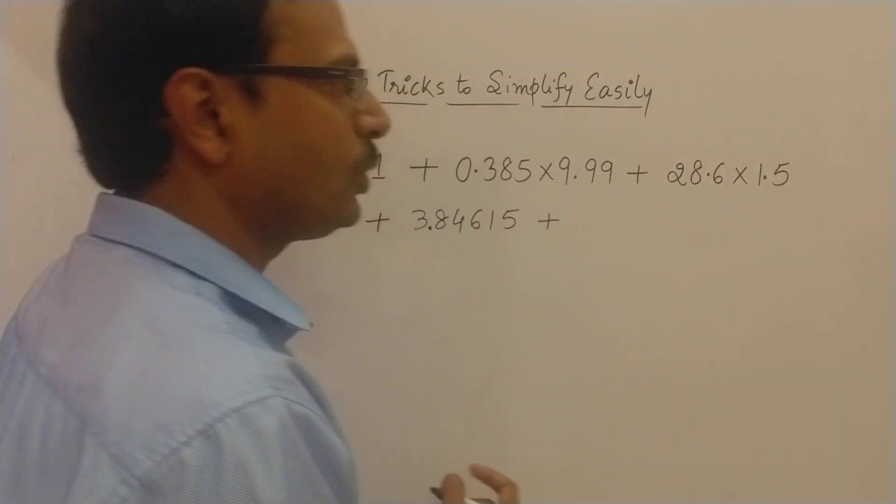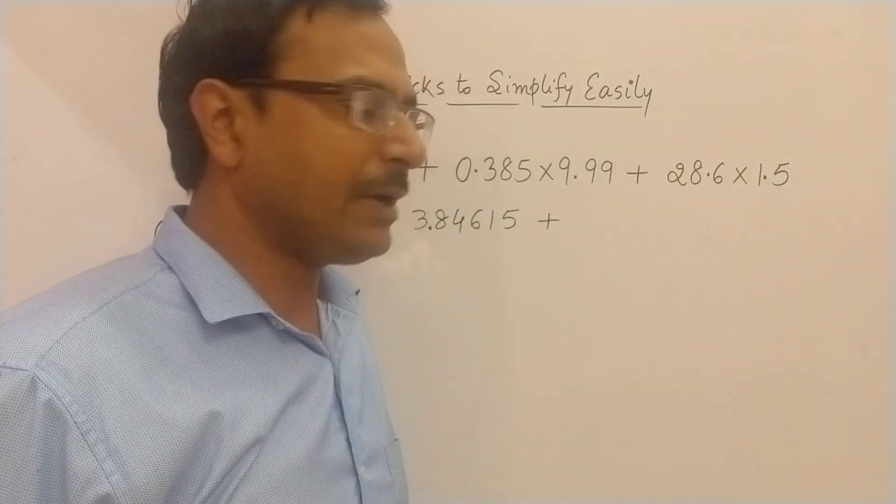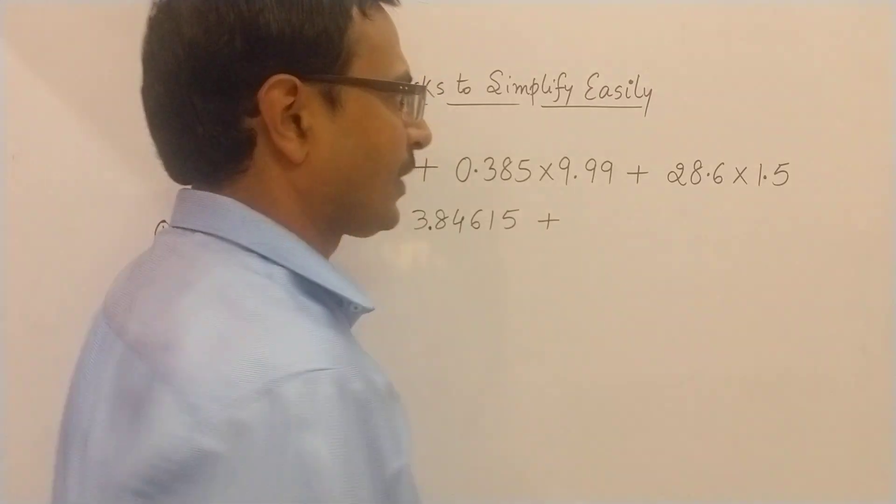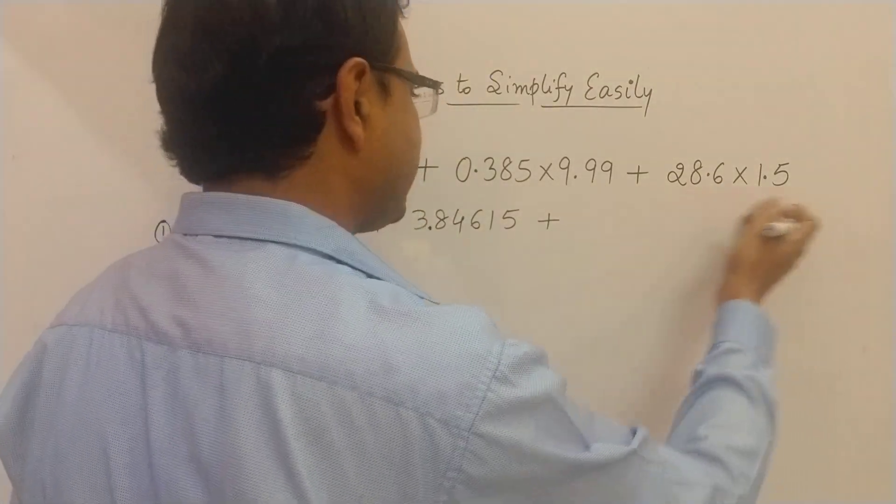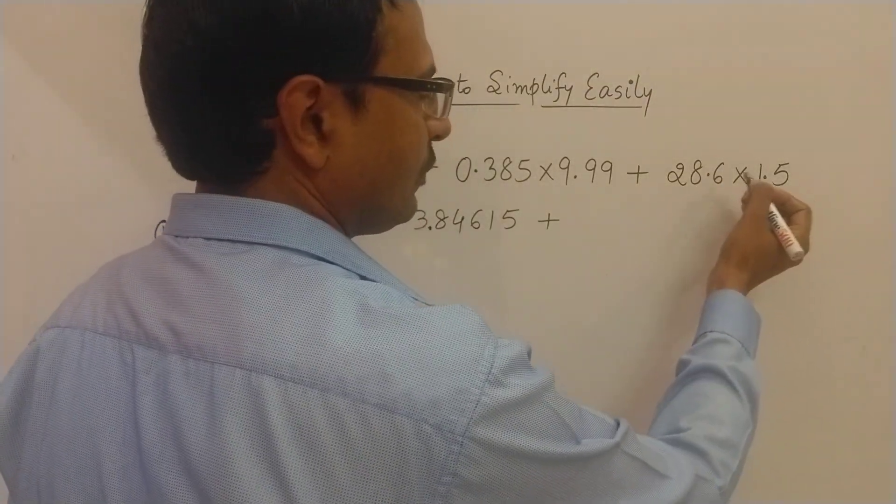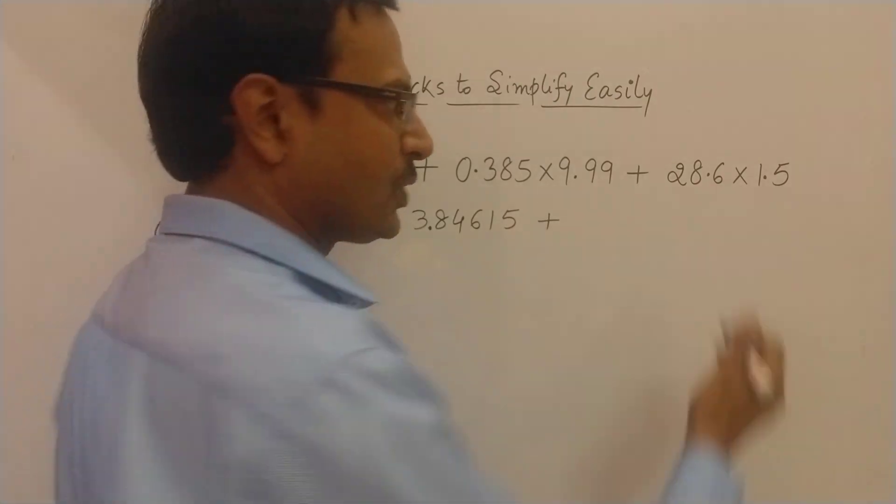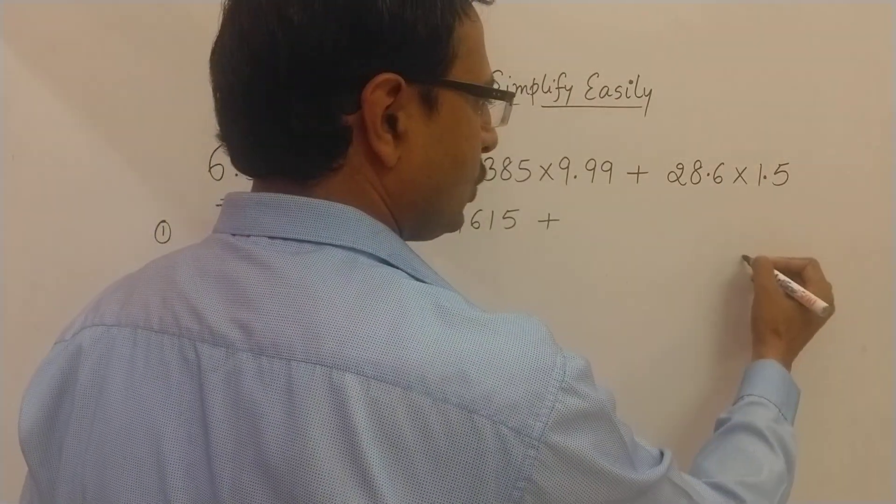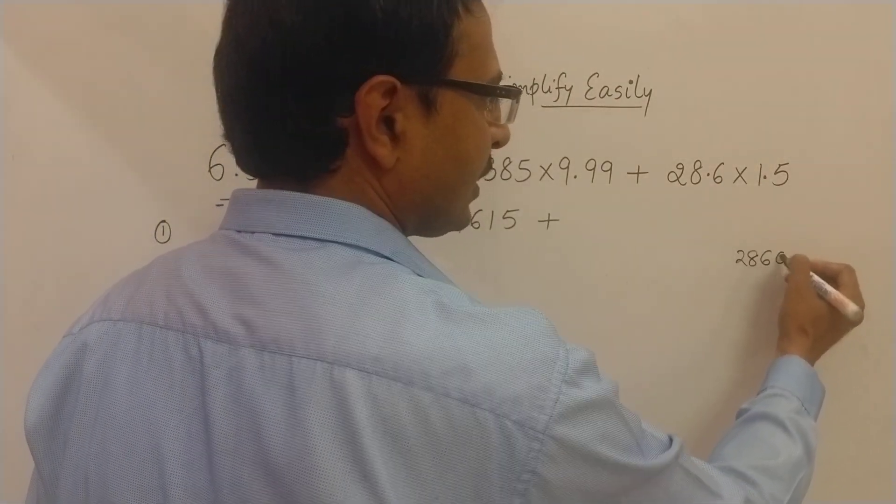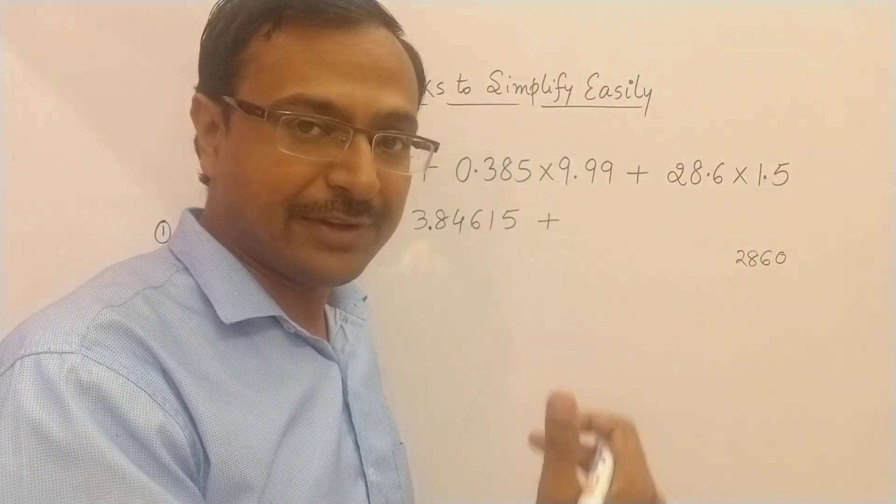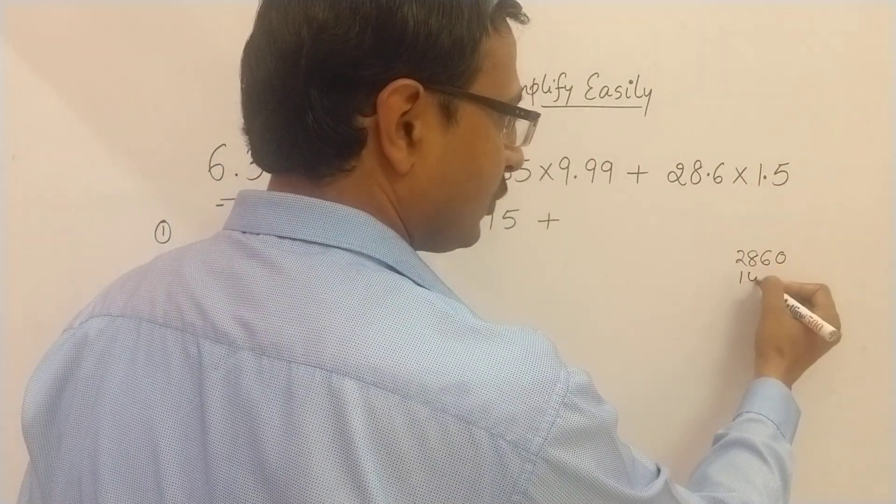Now come to multiplication by 15. How do you multiply numbers by 15? This is done if you remove the decimal first. So 15 is 10 plus 5. So 286 into 10 will be 2860, and then into 5 means half of that. So half of this is 1,430.